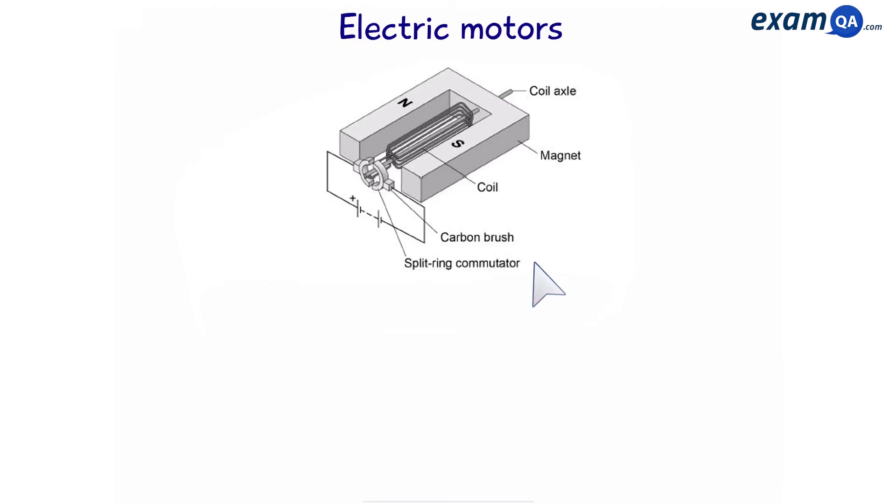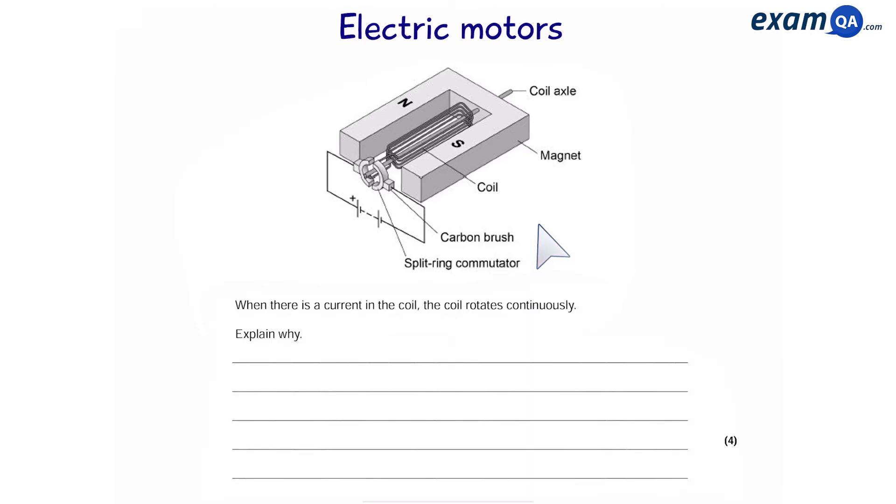Next question. Here we have an electric motor. When there is a current in the coil, the coil rotates continuously. Explain why. This is a classic example of how does an electric motor work. Now it's worth four marks, so it's important to describe every single step. Number one.